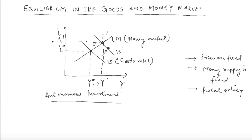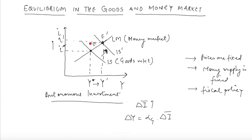If you go back to the video where we discussed the IS curve, we had noted that if the IS curve changes by delta I - if some autonomous investment increases and the IS curve shifts by delta I - then a multiplier effect works, and we notice that the change in output will be alpha_G times delta_I. So the shift occurring in the IS curve is actually equal to alpha_G × delta_I. However, you will notice that the actual change in equilibrium output looks smaller than this value of alpha_G × delta_I.